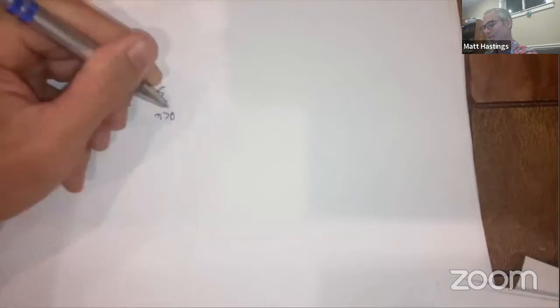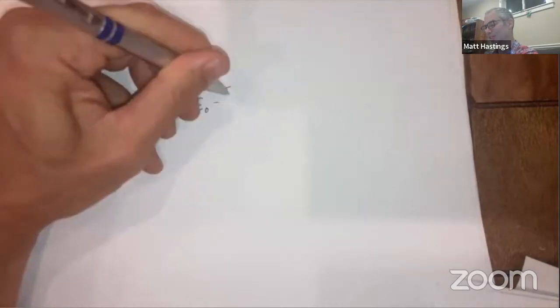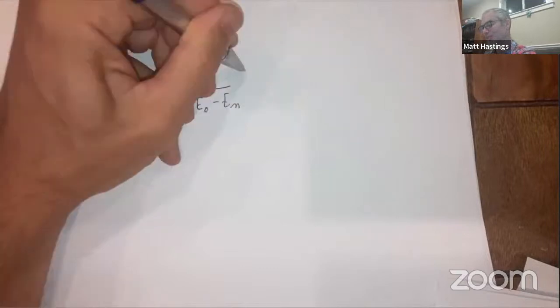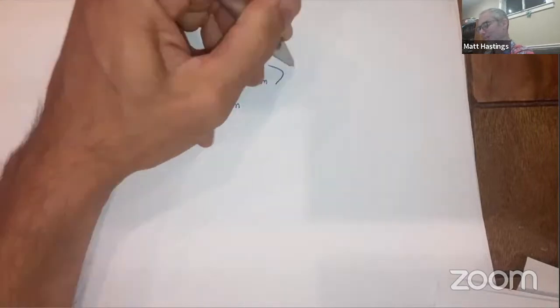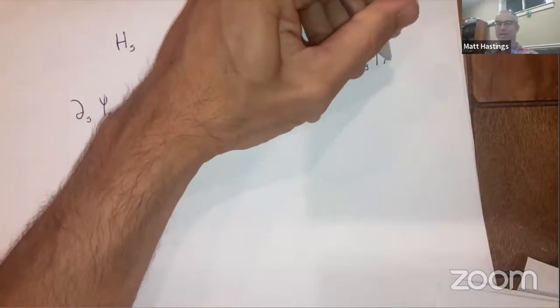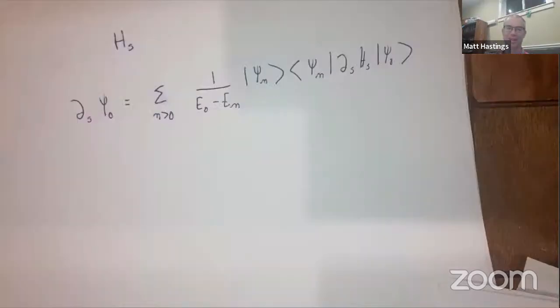Quasiadiabatic continuation is a way of understanding how the ground state changes if you have some parameter-dependent Hamiltonian H(s). Assuming a unique ground state, by standard perturbation theory: d_s psi_0 = sum over n > 0 of [<psi_n | d_s H | psi_0> / (E_0 - E_n)] |psi_n>. This involves the function 1/(E_0 - E_n), which diverges near the origin.